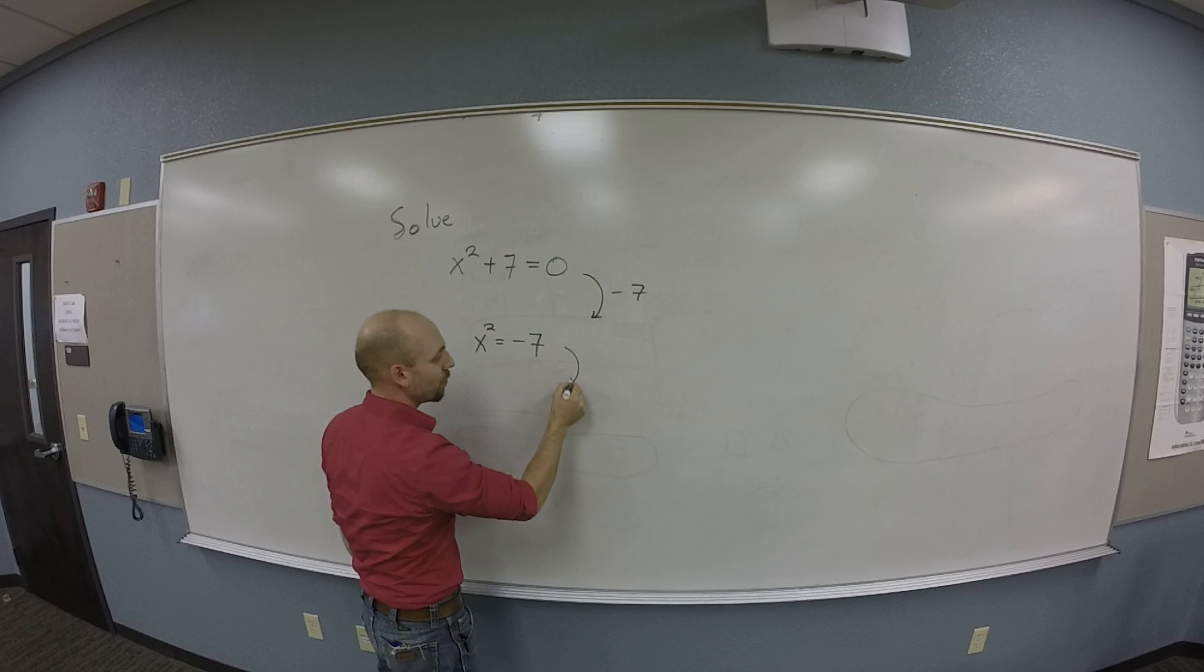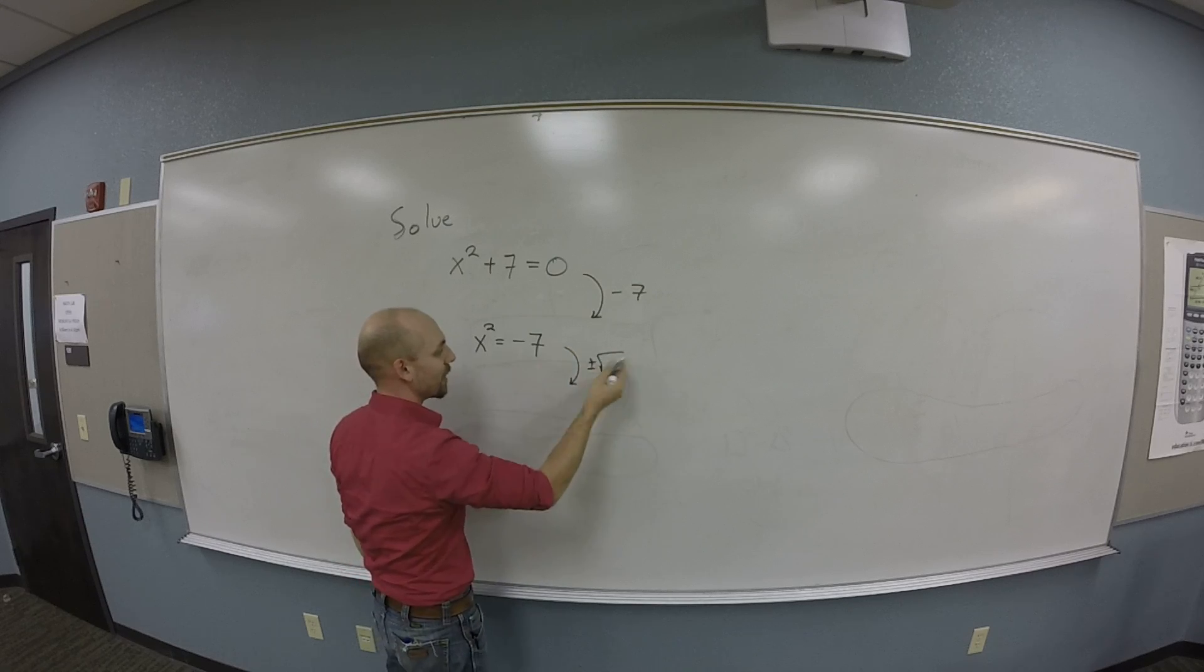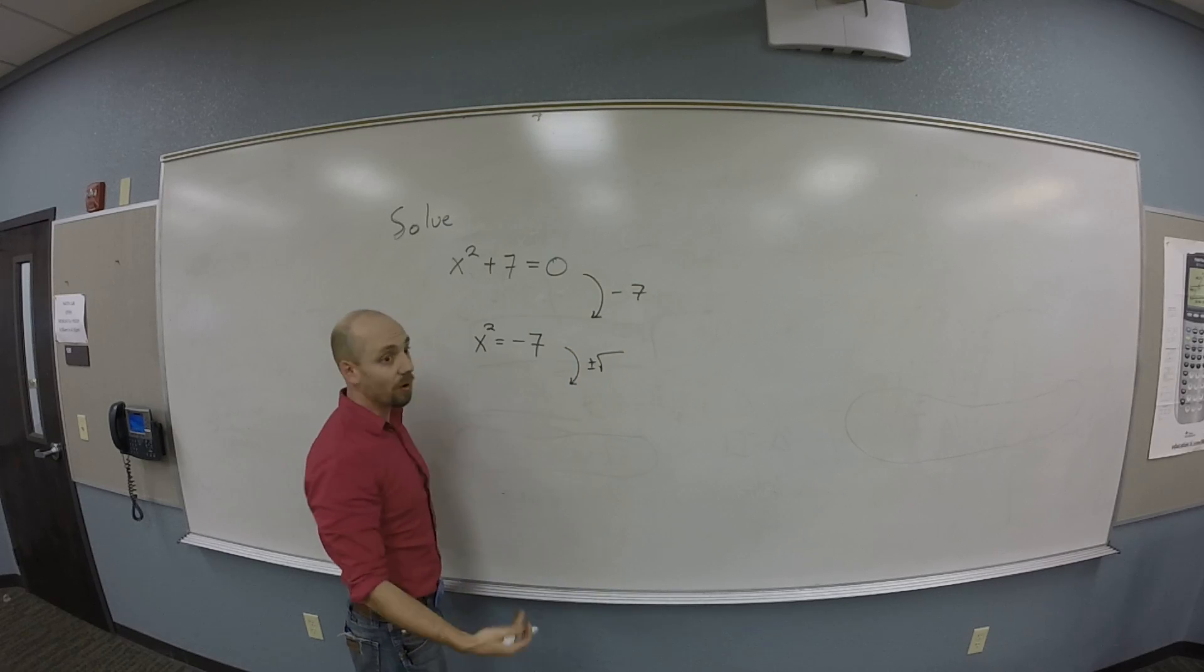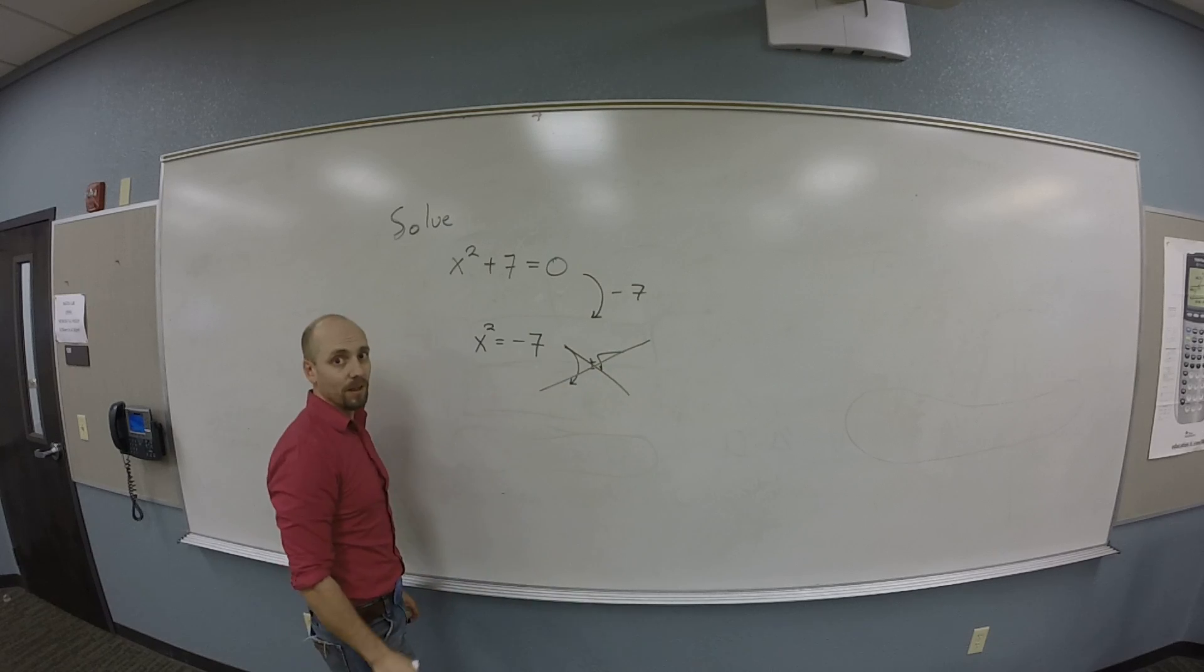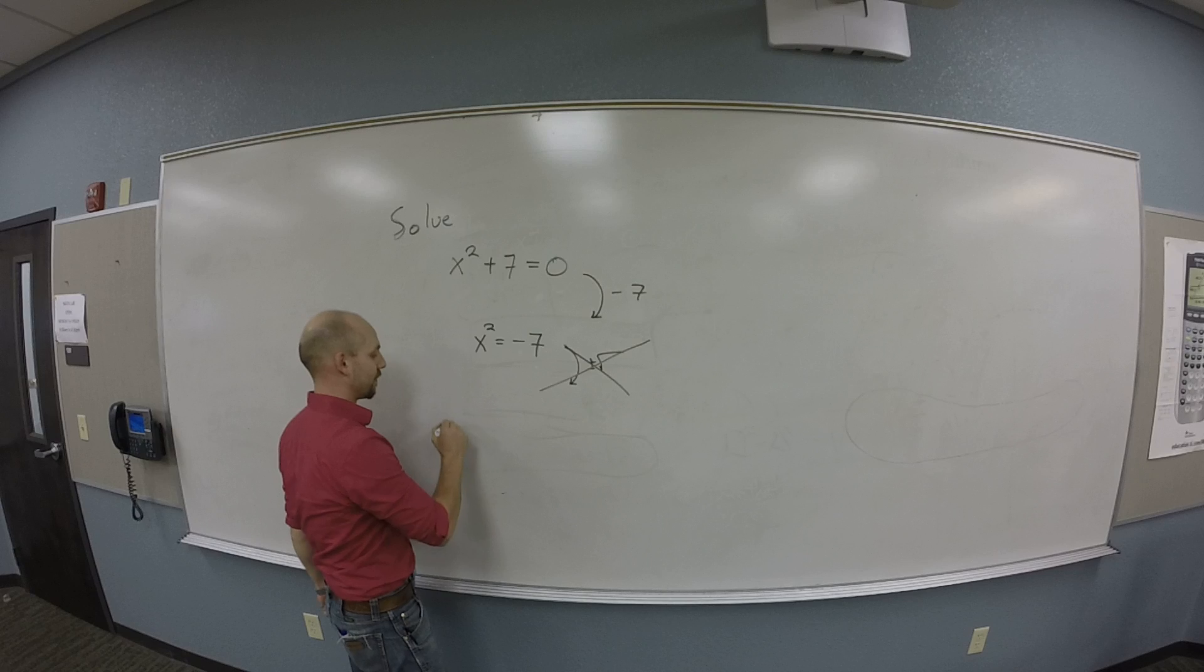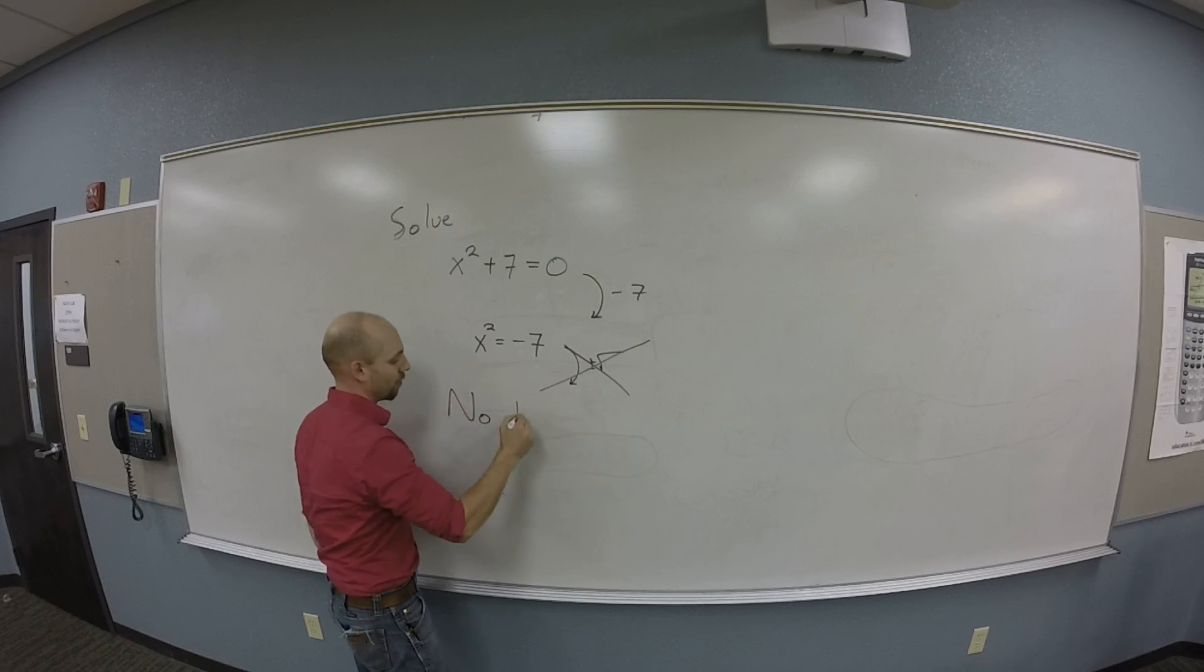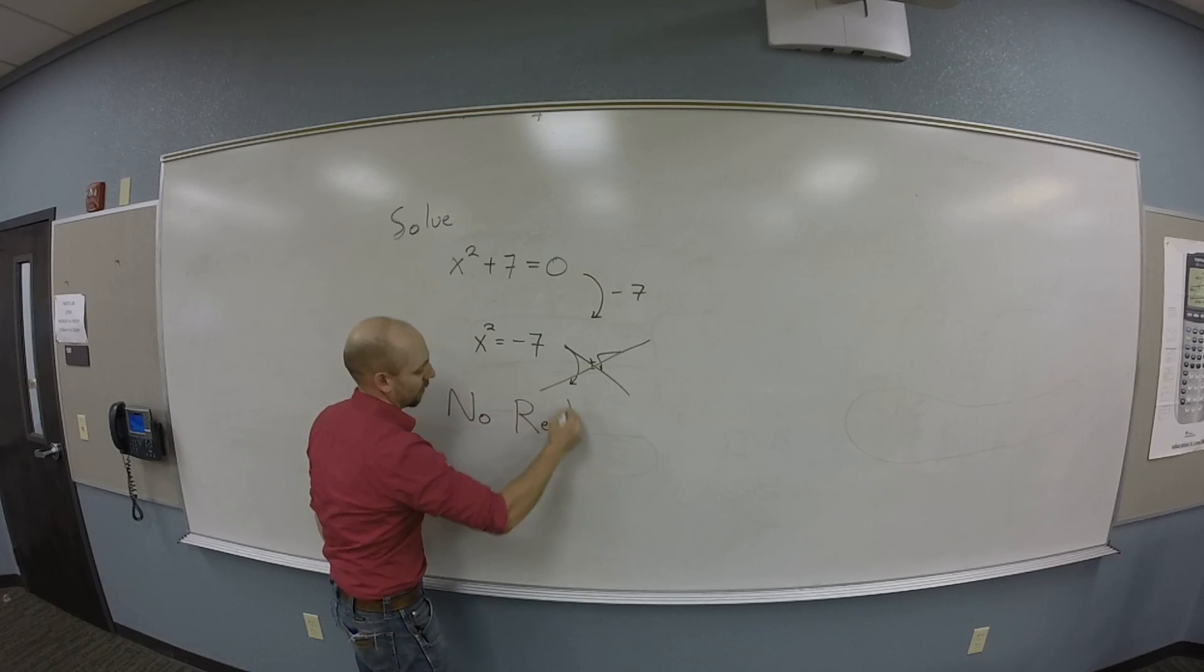So don't do this step. This step doesn't even make any sense here. You don't know how to unsquare negative numbers. So this is not an option, and thus I have to write this thing: no real solution.